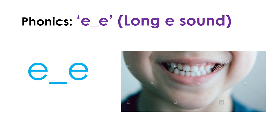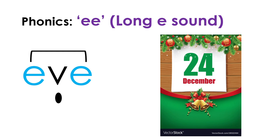Today for phonics we're going to be looking at the long E sound in the form of a split blend. We looked at split blends before, and this dash would be the space for a letter. These two letters together say E, so we would sound them first and then go to the letter that's here to get the word. So they say E. Our first word — remember we're going to sound these together. The word is Eve.